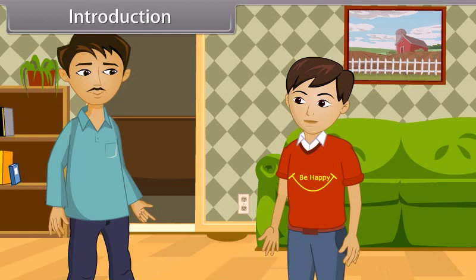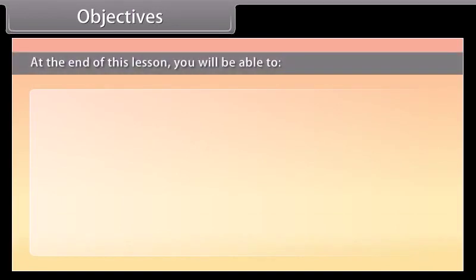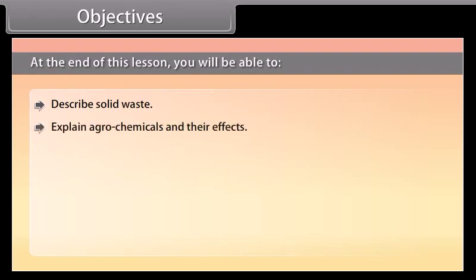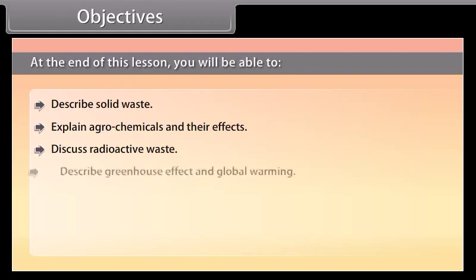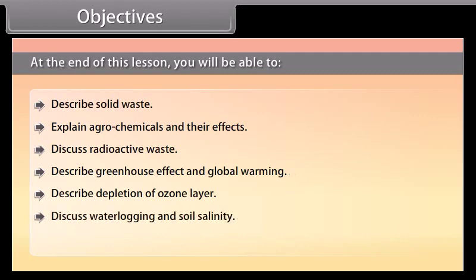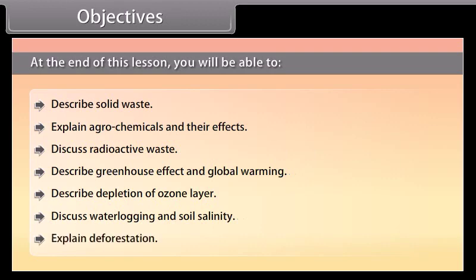In this lesson, you will learn about environmental issues. Objectives: At the end of this lesson, you'll be able to describe solid waste, explain agrochemicals and their effects, discuss radioactive waste, describe greenhouse effect and global warming, describe depletion of ozone layer, discuss waterlogging and soil salinity, and explain deforestation.